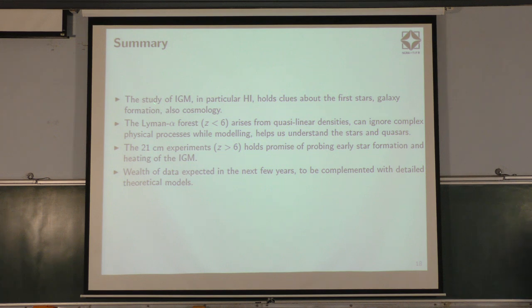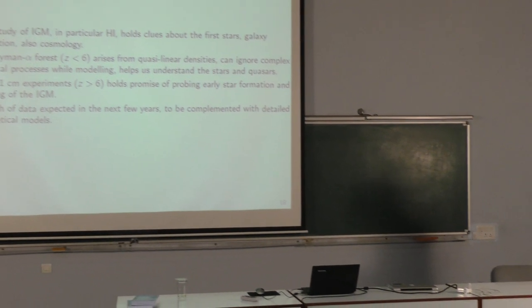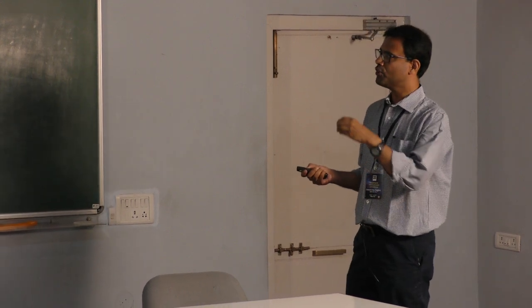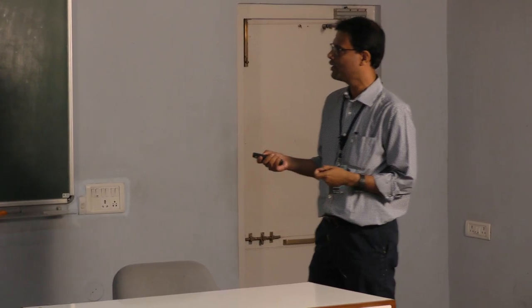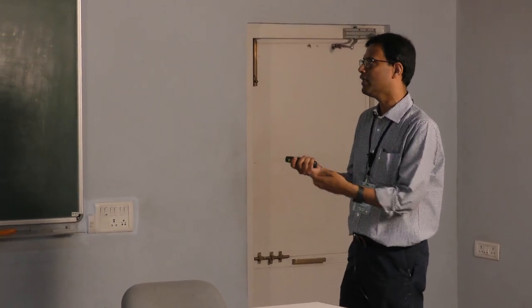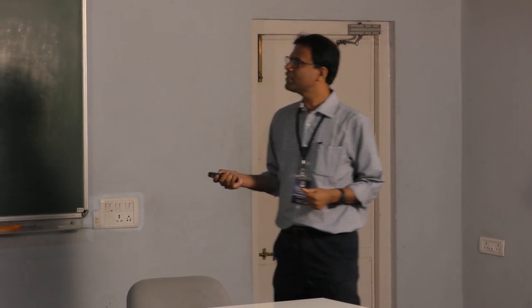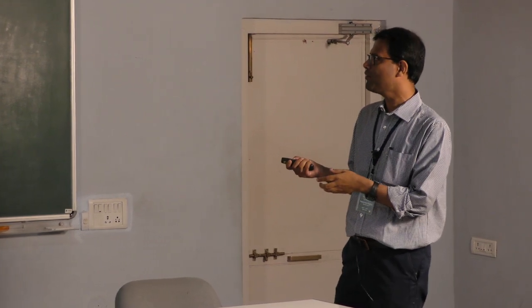One needs models which can start predicting this and smoothly integrate into the Lyman alpha forest constraints. This is where I can summarize. The study of the intergalactic medium, in particular neutral hydrogen, holds in principle clues about the first stars, the galaxy formation and also some cosmology. The Lyman alpha forest is very useful at lower redshifts. It arises from densities which are not very high, not very non-linear. One can model it ignoring very complex physical processes. The Lyman alpha forest, if you can constrain your model using observation, can give you indirect understanding of the galaxy formation, the stars and the quasars and so on. The future probably lies in 21 centimeter experiments which will be very useful in probing the intergalactic medium at higher redshifts. They will be very useful in probing early star formation and early heating of the intergalactic medium. Both these fields, wealth of data expected in the next few years. From the theory side, one needs to complement with very detailed theoretical models to interpret them. Thank you very much.